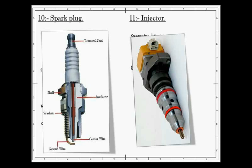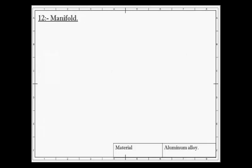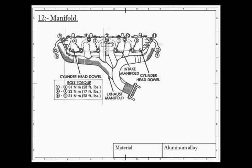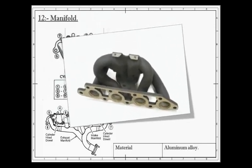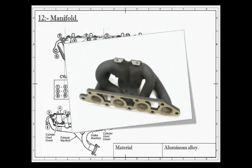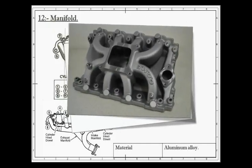Next is manifold. The main function of manifold is to supply the air-fuel mixture and collect the exhaust gases equally from all cylinders. In an internal combustion engine, two manifolds are used. One for intake and other for exhaust. They are usually made by aluminum alloy.